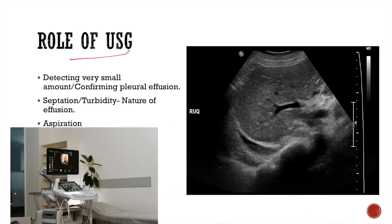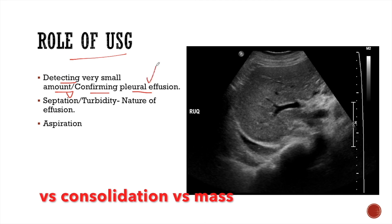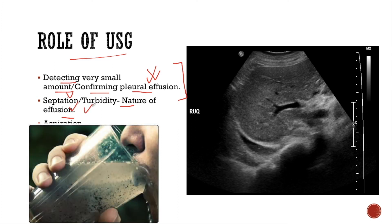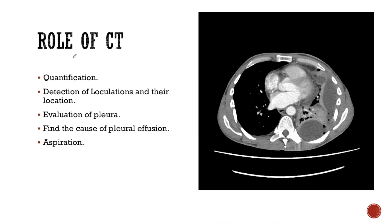Ultrasound is very good at detecting small amounts of effusion and helpful in confirming whether an opacity is pleural effusion versus consolidation or a pleural-based mass. It can provide information on the nature of effusion by assessing septations and turbidity — septations and turbidity suggest infection or exudative effusion. Ultrasound can also guide aspiration of the fluid.